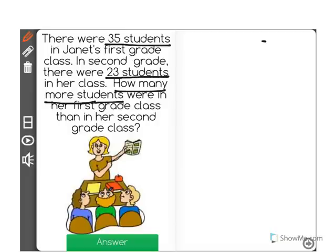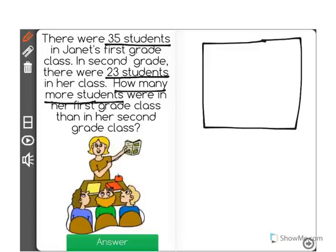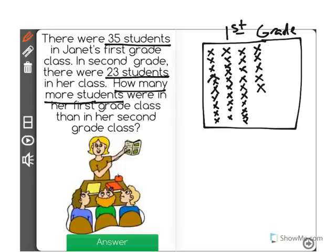Let's draw a picture to visualize this. In her first grade class, there were 35 students. So I'm going to go ahead and draw 35 students. Each X represents one student. There are a total of 35 X's for each of the 35 students.